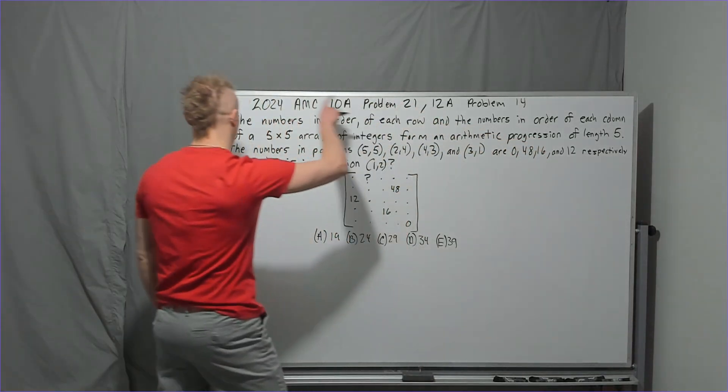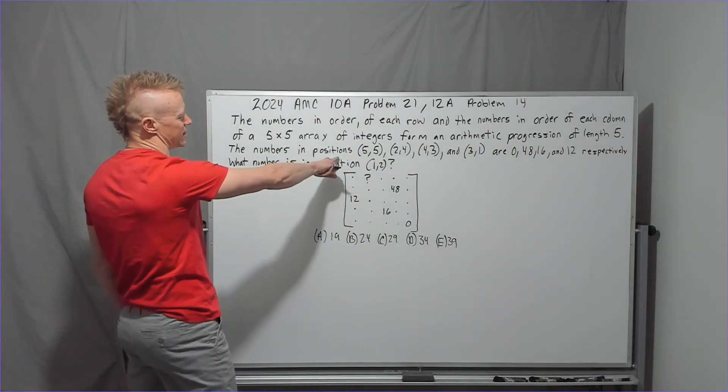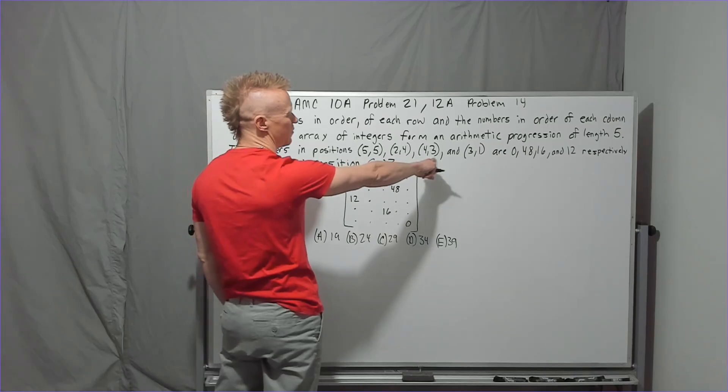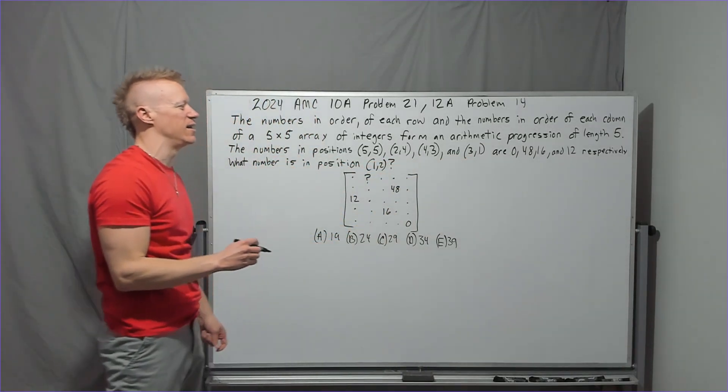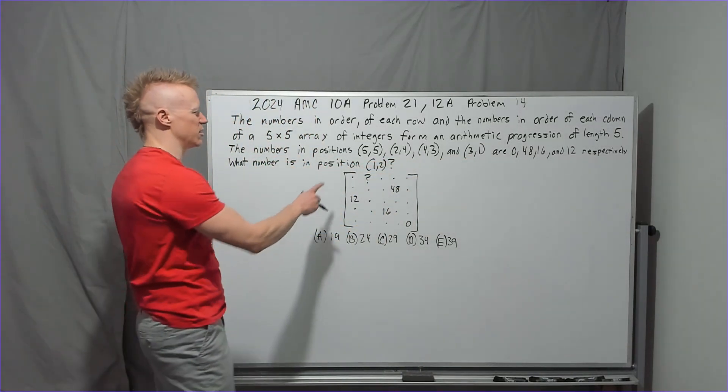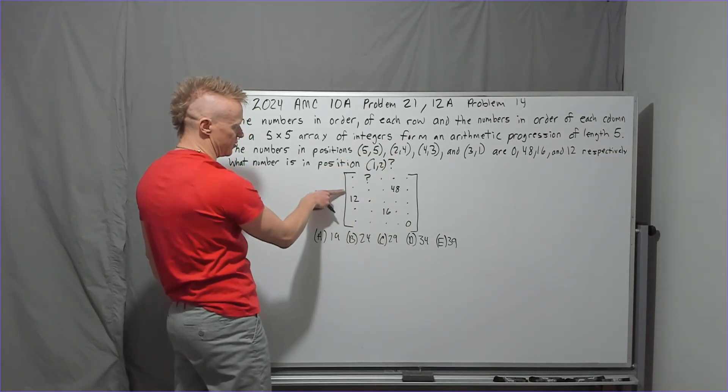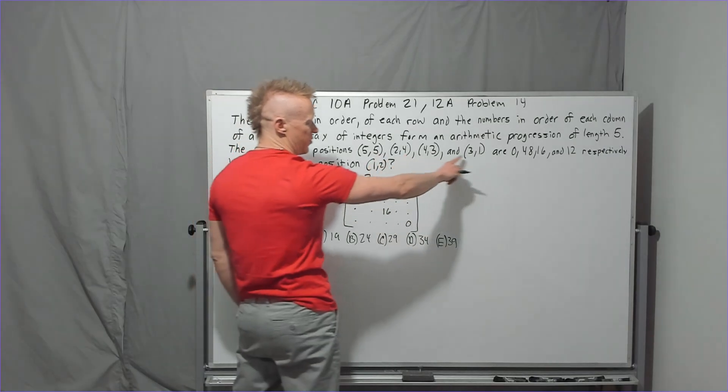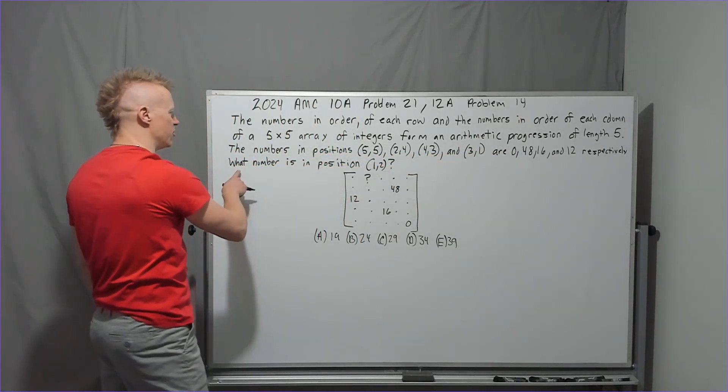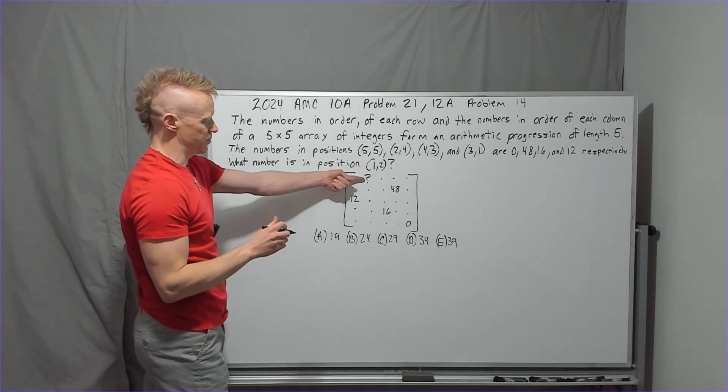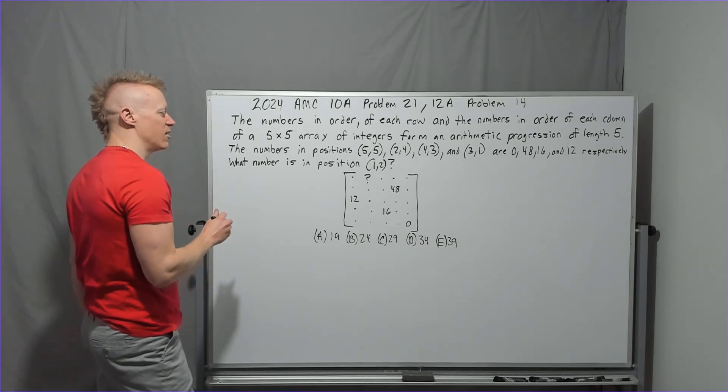So of length five, the numbers in positions five five, two four, four three, and three one are zero. So five five is row five, column five, and then two four, row two, column four. They are those values there. They give them to you. What number is in this position with the question mark?